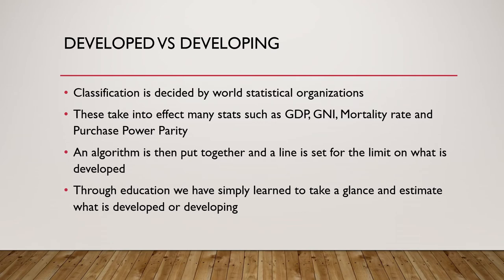The second part of my presentation is what makes a country developed versus developing. Classification is decided by world statistical organizations that come to joint agreements. Many formulas and stats are taken into it, including GDP, GNI, mortality rate, infant mortality rate, and purchasing power parity. Most of the time they use average statistics — what we call umbrella stats. GDP, for example, takes in a ratio of what is shipped out, what comes into the country, and what is made. Mortality rate tells a tale about life expectancy and the amount of satisfaction someone gets from life there.